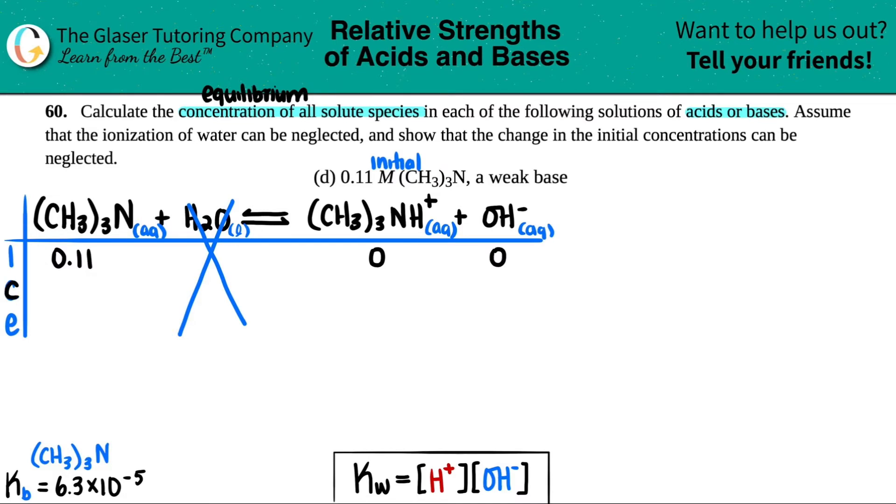C stands for change, and it's the change in your initial concentrations. You can't go lower than if you don't have anything. You could only go up from zeros. No such thing as negative molarity. So I know this side has to be plus, which means the reactants have to be minus. I don't know by how much, so I'm going to label it a variable X. This would be minus X, plus X, and plus X. E stands for equilibrium, and that's always the initial combined with your change. So 0.11 minus X, zero plus X is X, zero plus X is just X.